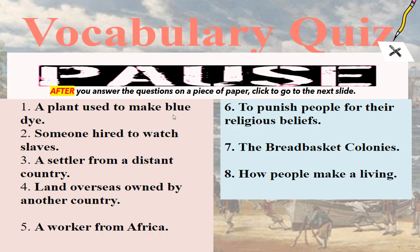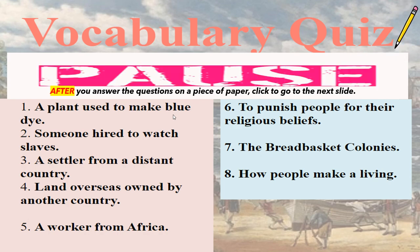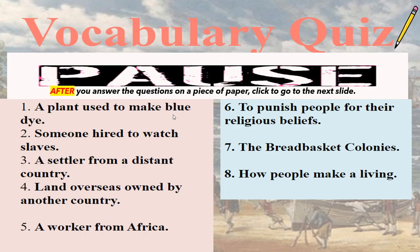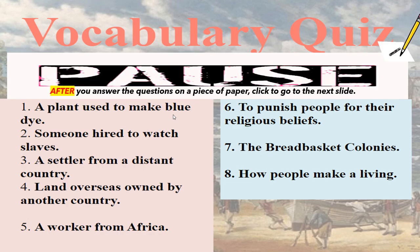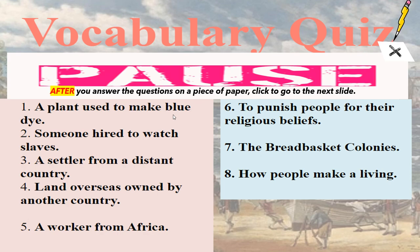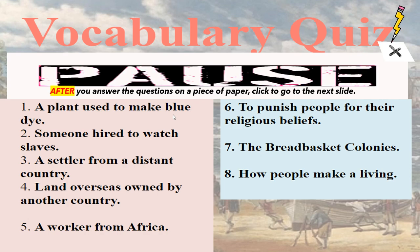Take out a piece of paper and pause this video. Answer these eight questions from your vocabulary. Number one: a plant used to make blue dye — indigo. Number two: someone hired to watch slaves — overseer. Number three: a settler from a distant country — colonist. Number four: land overseas owned by another country — colony. Number five: a worker from Africa — slave. Number six: to punish people for their religious beliefs — persecute. Number seven: the breadbasket colonies were the middle colonies. Number eight: how people make a living — economy.